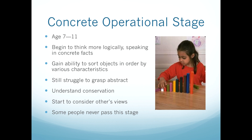Children between the ages of seven and eleven are in the concrete operational stage. During this stage, children are beginning to think more logically, and begin to work things out in their head without having to physically try it, though their logic is very rigid. They are able to perform tasks involving sorting or ordering, whether by shape, size, color, or other characteristic. They also achieve understanding of conservation.